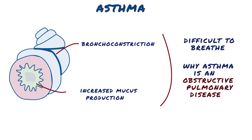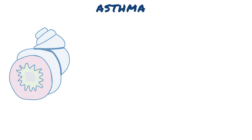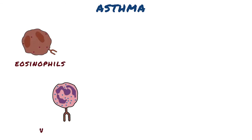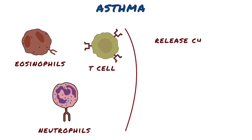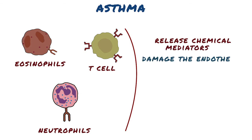The late phase reaction is dominated by recruitment of leukocytes, notably eosinophils, neutrophils, and more T cells. A few hours after exposure, these immune cells — particularly eosinophils — release chemical mediators that physically damage the endothelium of the lungs.